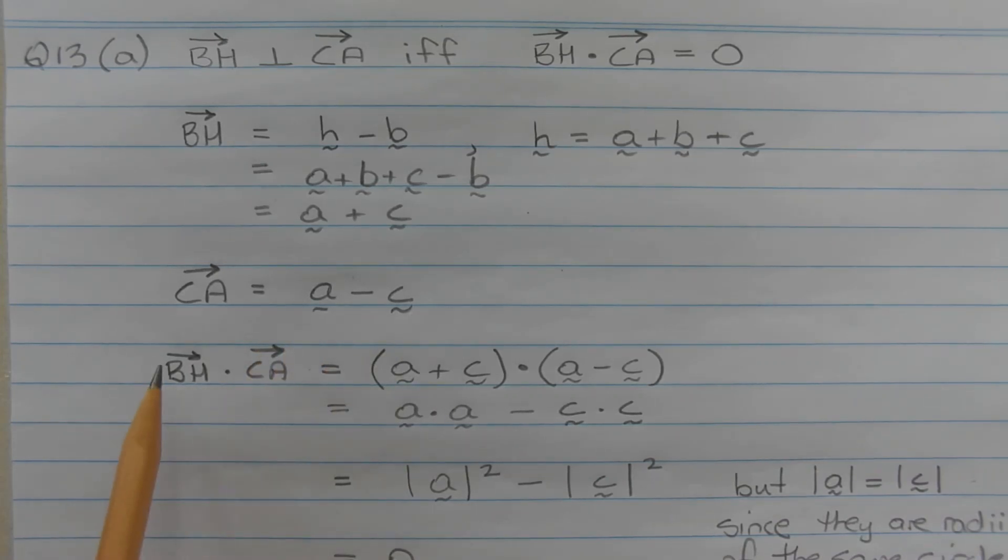The dot product of vector BH and vector CA is equal to the dot product of vector A plus vector C and vector A minus vector C. Expanding the brackets that equals vector A dot vector A minus vector C dot vector C.